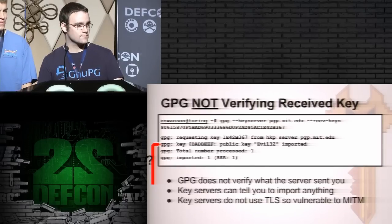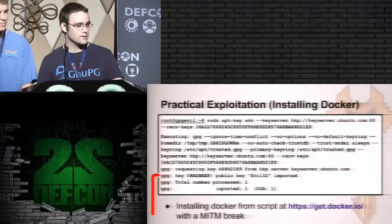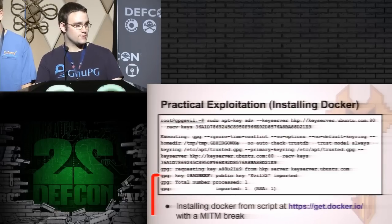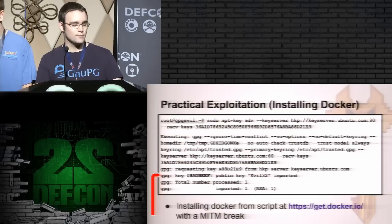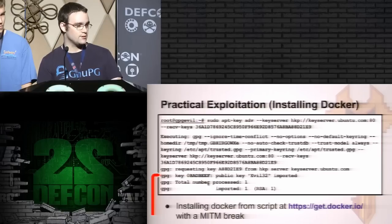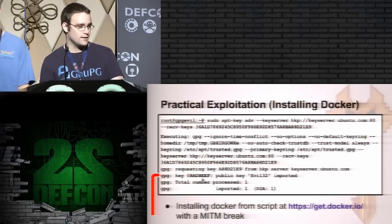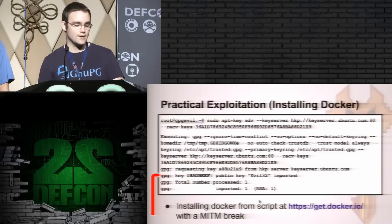Since the key servers don't use transport-level security or anything else like that, they're vulnerable to man-in-the-middle attacks. For a practical exploitation of that, this line comes from Docker's install script. If you use apt-key adv with --recv-keys and give it a full fingerprint, but with a man-in-the-middle attack, you'll see that we fetched the zero-bad-beef key, and now that's in your APT key ring. This comes from the script at get.docker.io.